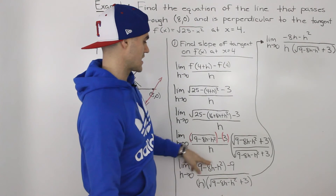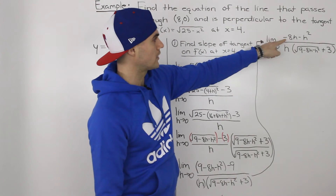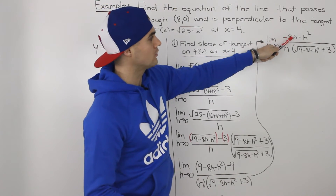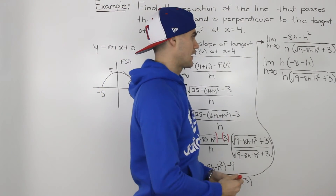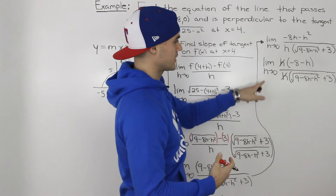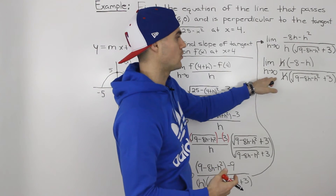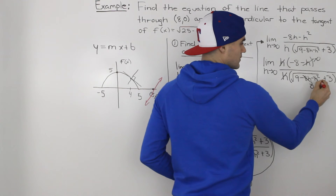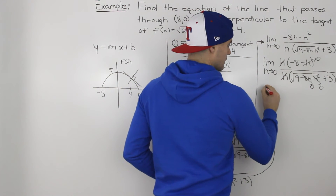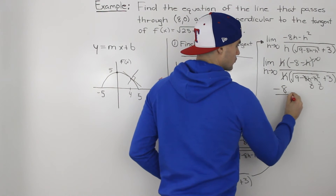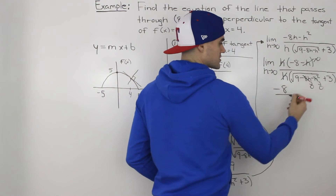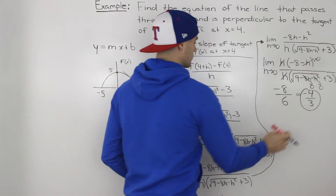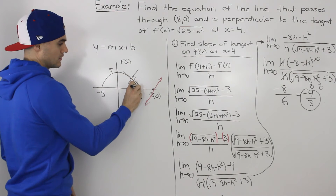Continuing from there, notice how the 9s in the numerator cancel out. So in the numerator we're left with negative 8h minus h squared, and the denominator stays the same. Now notice that all expressions in the numerator contain an h, so we can factor out an h. These h's then cancel with the h in the denominator. Now we can plug in 0 for h without getting an undefined result. Setting h to 0, we're left with negative 8 in the numerator, and the square root of 9 is 3, so 3 plus 3 is 6 in the denominator. Negative 8 over 6 simplifies to negative 4 over 3. That represents the slope of the tangent at an x value of 4.